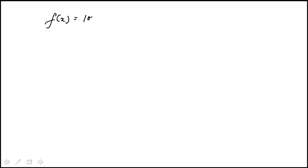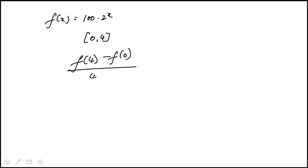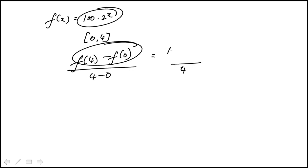We're given this exponential function and asked to find the average rate of change on the interval 0 to 4. That would be represented by the difference in the value of the function at the endpoints divided by the spacing. So f of 4 — I can replace x with 2 to the 4 — and then f of 0 would be 100 times 2 to the 0.